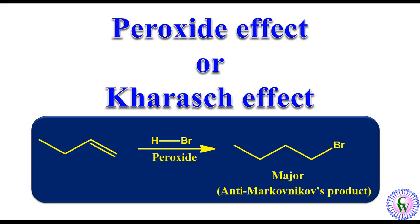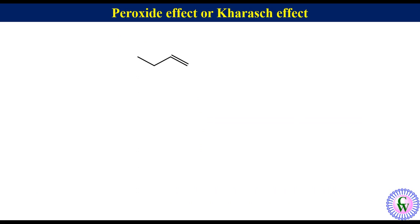Suppose we have an unsymmetrical alkene, 1-butene, and we are allowing it to react with HBr. Then according to Markonikov rule, the positive part of the reagent — that is, the proton of HBr — will preferentially go to the carbon of the double bond that has more number of hydrogen atoms, and the negatively charged part, which is Br, will go to the carbon of the alkene with less number of hydrogen, to produce 2-bromobutane as the major product. This is called the Markonikov product.